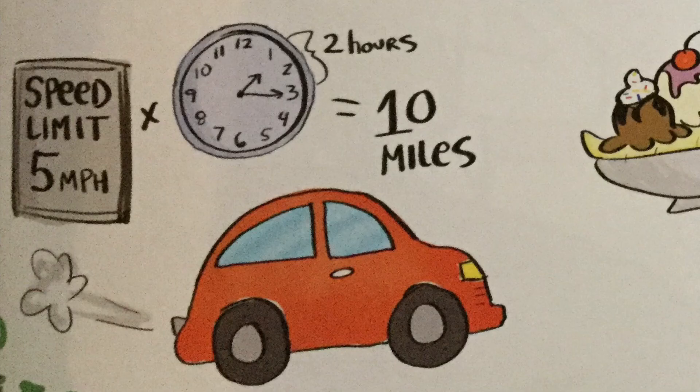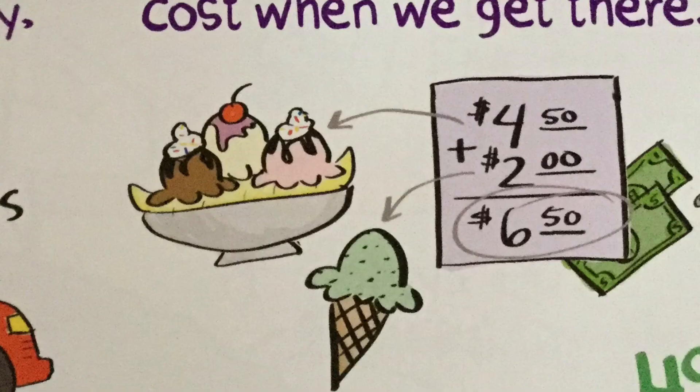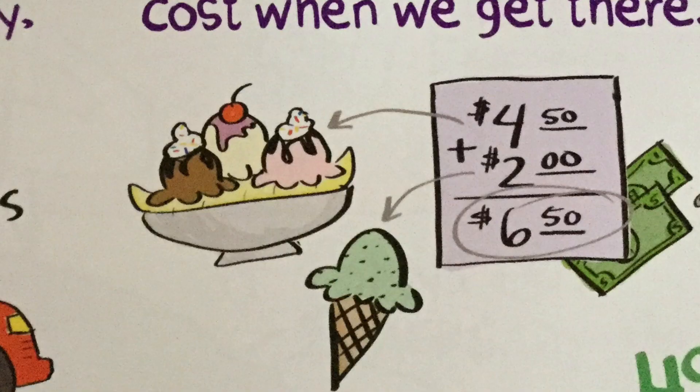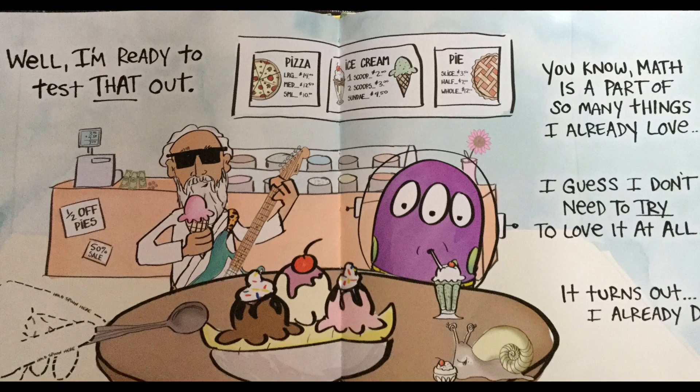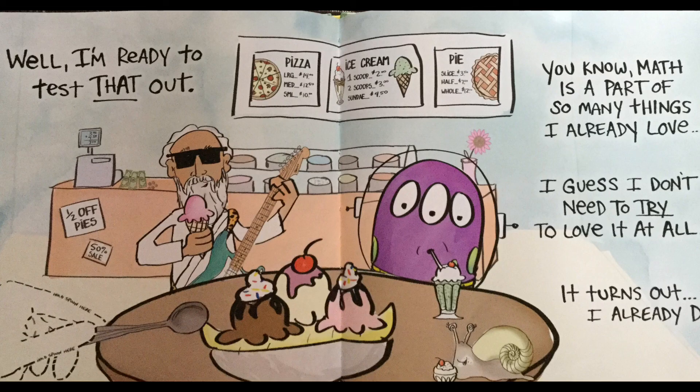So if we're driving at 5 miles an hour, and it takes us 2 hours to get there, that means we've gone 10 miles. And if a sundae costs $4.50, and an ice cream cone costs $2, then we need $6.50. Okay. Well, I'm ready to test that out. You know, math is a part of so many things I already love. I guess I don't need to try to love it at all. It turns out, I already do.